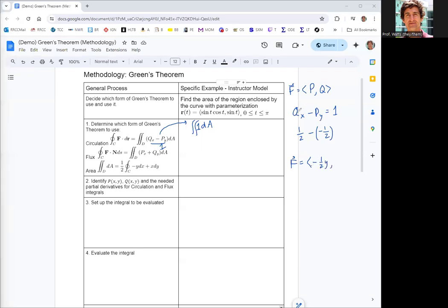And if the partial derivative of q with respect to x is one half, then it must have been positive one half x.